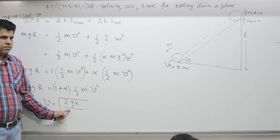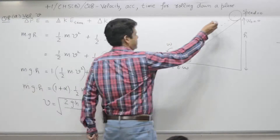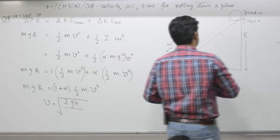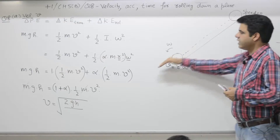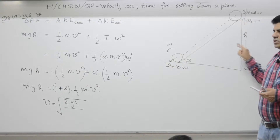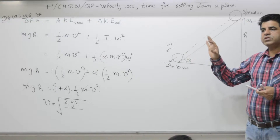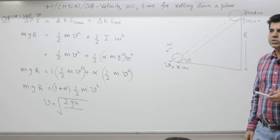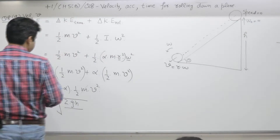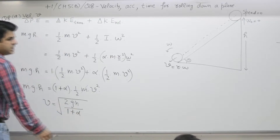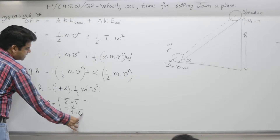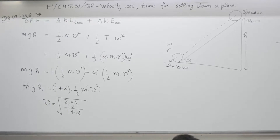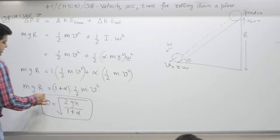Before that, consider if the object is not rolling but sliding — like a kid sliding down an incline. Then the decrease in potential energy mgh equals the increase in kinetic energy (1/2)mv², with no rotation. The speed comes out to √(2gh). But for rolling, it is less because it is divided by (1 + α).